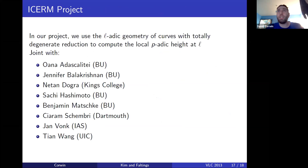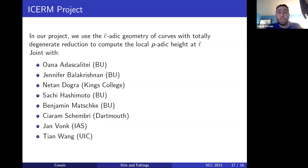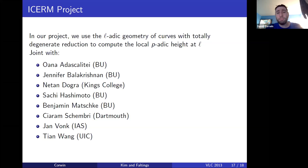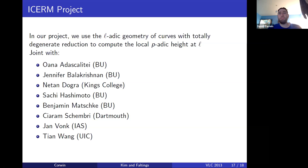In our ICERM project, we use the fact that these curves have totally degenerate reduction at L. That tells us something about the L-adic geometry. In particular, we do something with the log-crystalline cohomology and relate it to the graph homology of the dual graph of the semi-stable special fiber. Using some results from a paper in preparation, this allows us to say something about the contribution of the p-adic height at places of bad reduction.